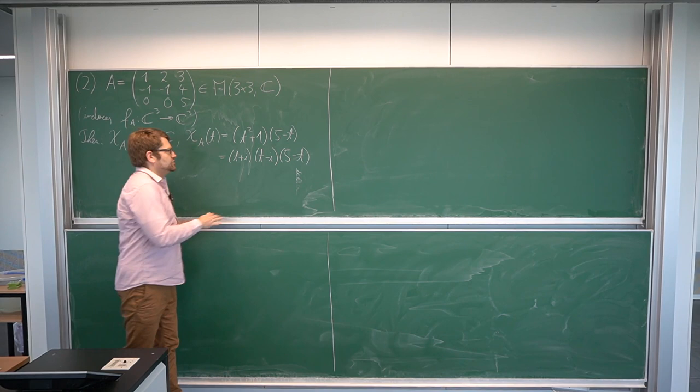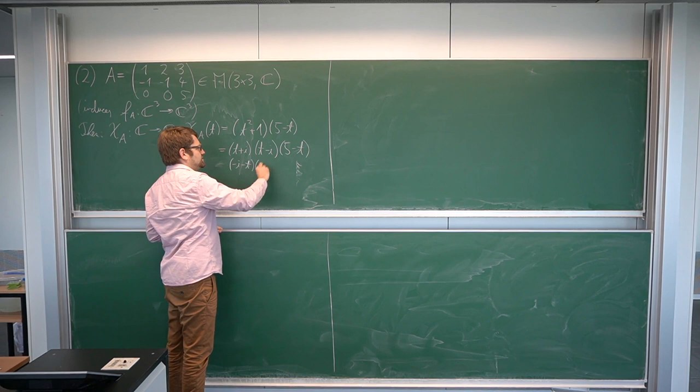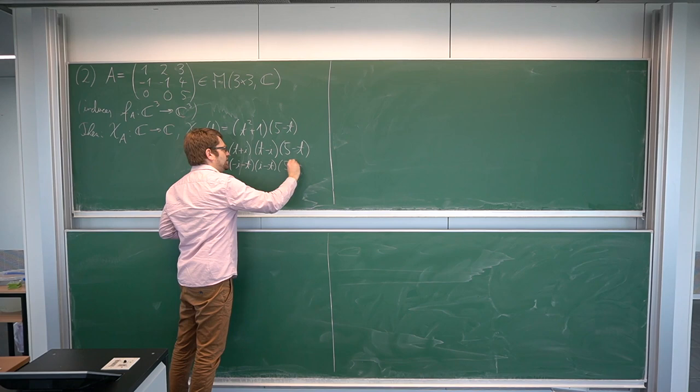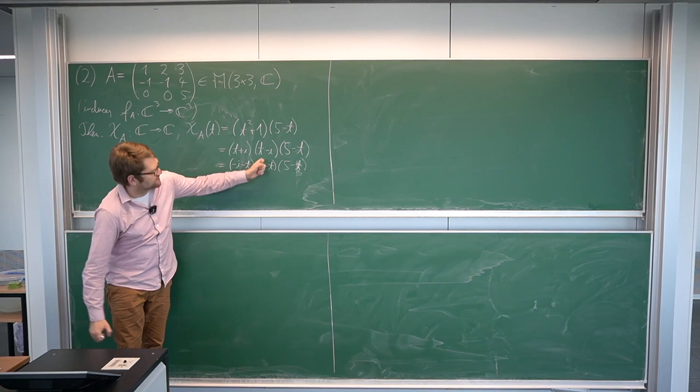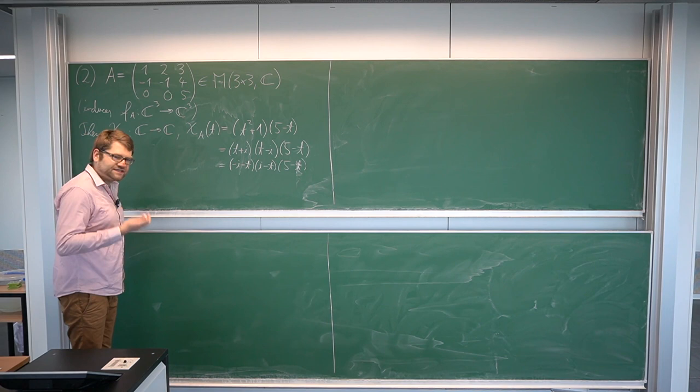To get this in the desired form, we can flip things, since this is the same as minus i minus t times, adding another minus, i minus t times 5 minus t. This is just by adding additional minus signs here and there to get the form we want. So in theory, nothing speaks against this map being diagonalizable, and it turns out it is. If we use this as a complex matrix, it is diagonalizable.